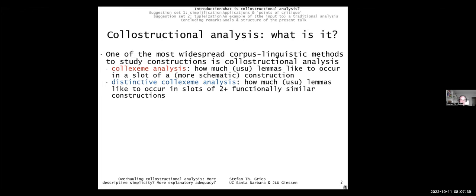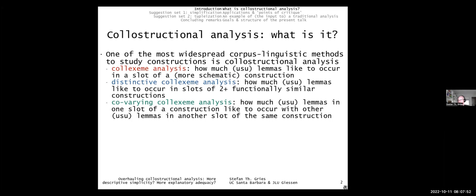Those two methods account for perhaps 90 to 95 percent of all collostructural studies. The third method — mentioned for completeness — is covarying colexeme analysis, where the idea is to look at how much lemmas in one slot of a construction like to co-occur with other lemmas in another slot of the same construction. For example, in the into-causative construction — 'to trick someone into believing,' 'to bully someone into accepting' — if the first verb is 'trick,' what verbs tend to appear in the second slot?